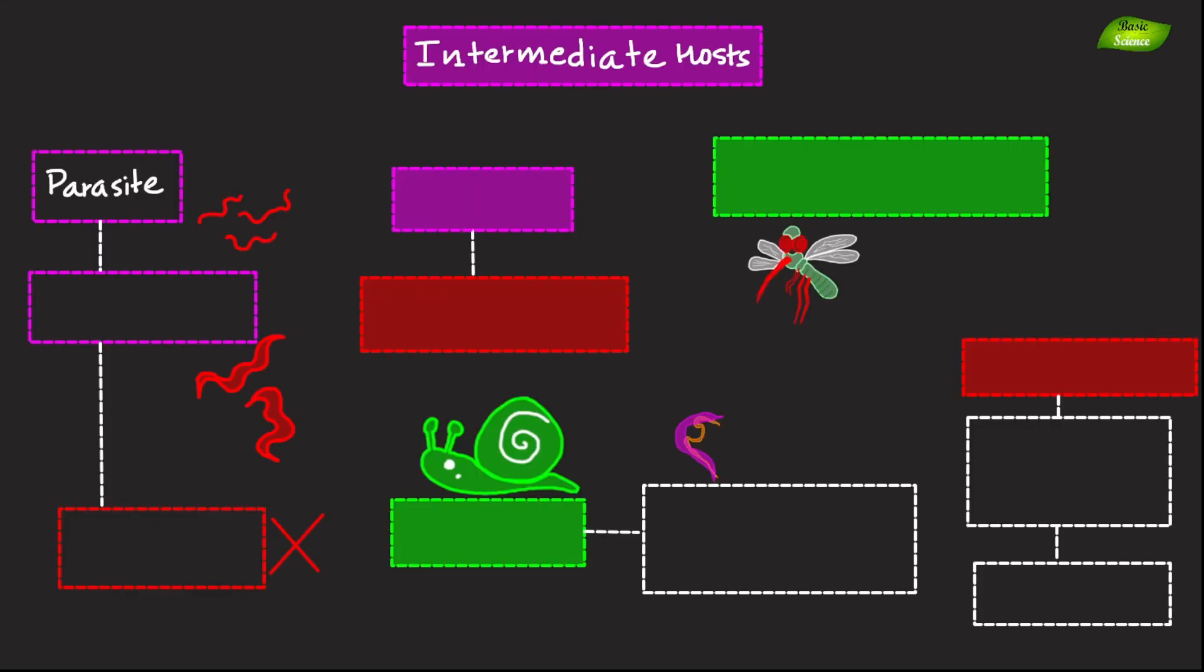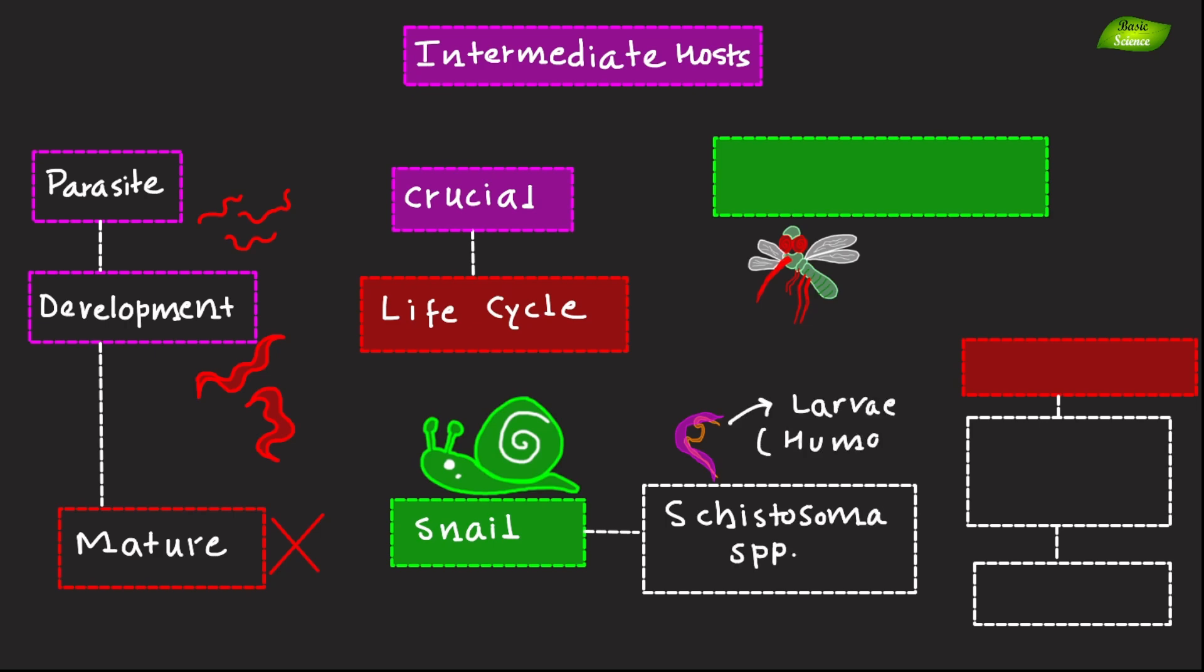Intermediate hosts are those in which a parasite undergoes development but does not reach maturity. These hosts are crucial for the parasite's life cycle. Example, snails, they act as intermediate hosts for Schistosoma species, where the larvae develop before infecting humans. Second example is mosquito for plasmodium species. In the life cycle of plasmodium, mosquitoes are intermediate hosts as the parasite develops within them before being transmitted to humans.